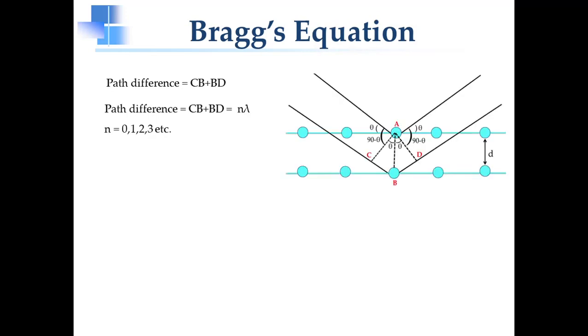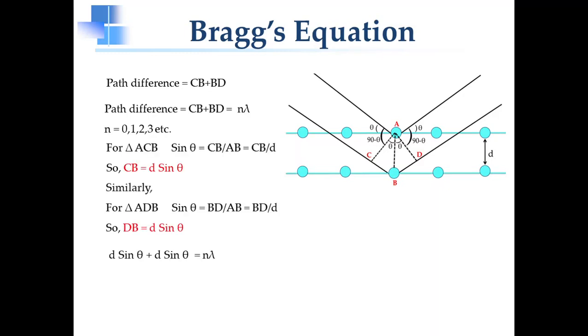The incident ray interacts with an atom at an angle theta and reflects at a certain angle. In case of reflection, both incident and scattered or reflected angles are same. Therefore, angle between ACB will be theta and so for the triangle ADB. So in triangle ACB, sin theta is equal to CB upon AB, and we know that AB is equal to D. So CB is equal to D sin theta.